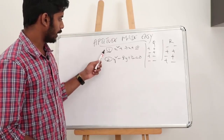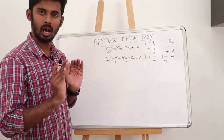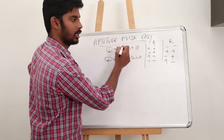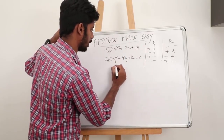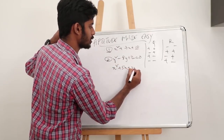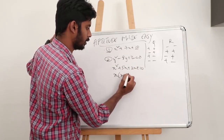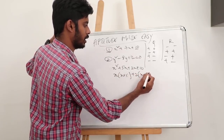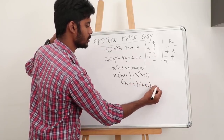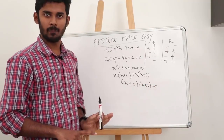Coming to the first one: when you get this kind of question, in general people try to solve it by making it 7 into 5x plus 2x plus 10. So this will be converted into x into x plus 5, plus 2 into x plus 5, written as x plus 5 into x plus 2 equals 0. So the answer is minus 5 or minus 2.